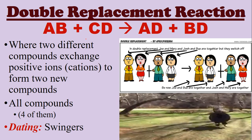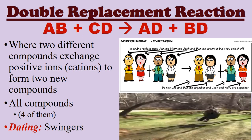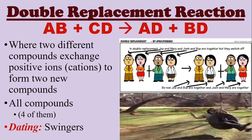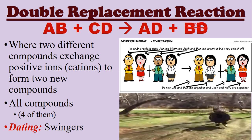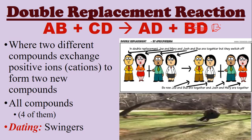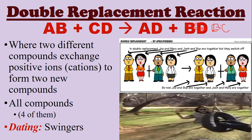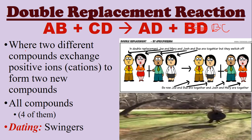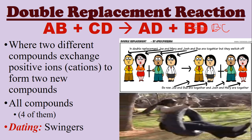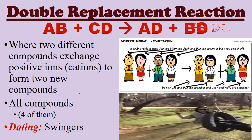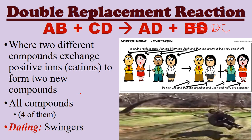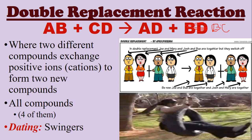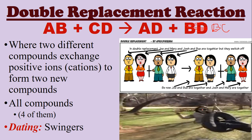The last main type is called a double replacement reaction. You have compound AB and compound CD. A and D start dating while B and C start dating — when two different compounds exchange positive ions to form two new compounds. There will be four compounds total, two on each side of the arrow. It's kind of like swingers — you can see in this picture here you have this couple and this couple, but all of a sudden the couples exchange themselves.